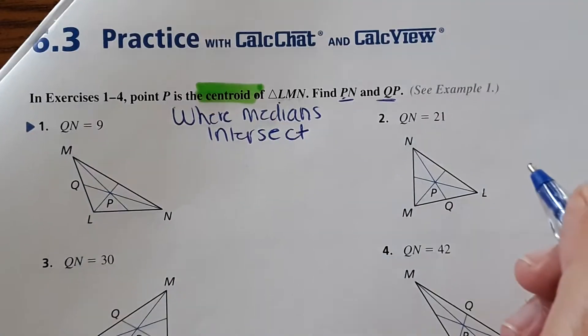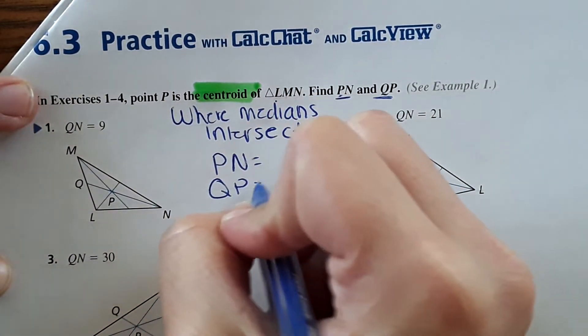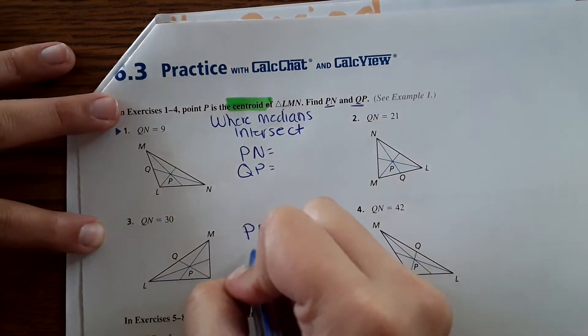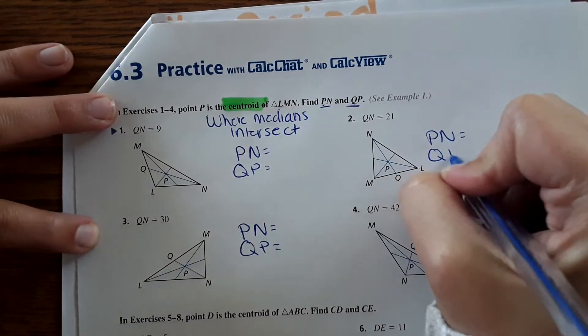And QP for all of them. So what I'm going to do is just write PN equals, QP equals for all four of the next problems.